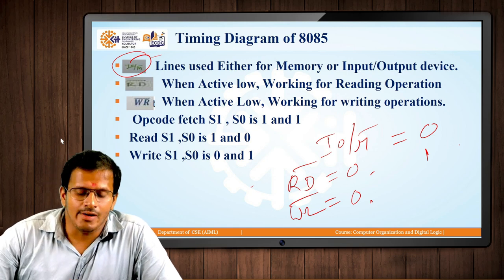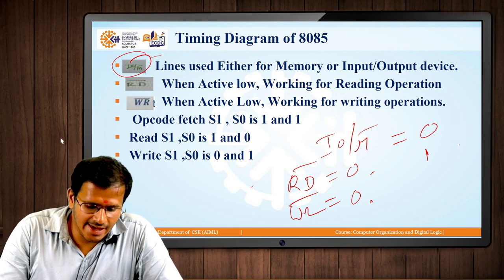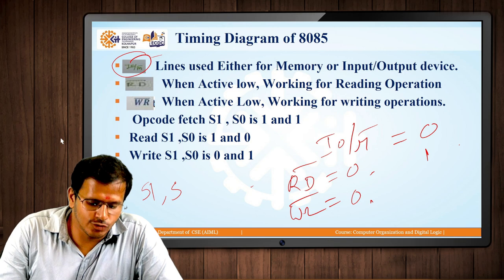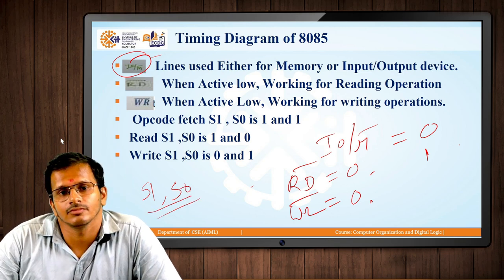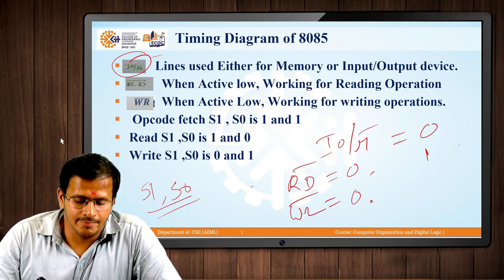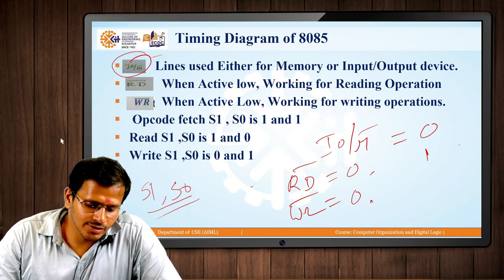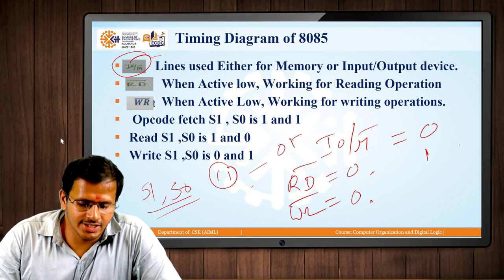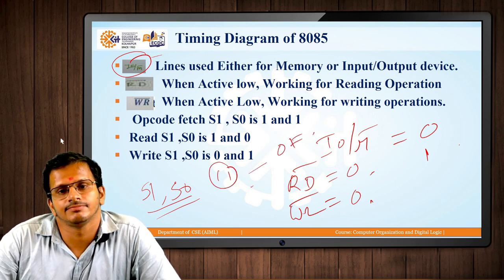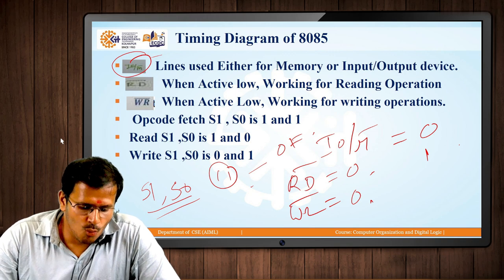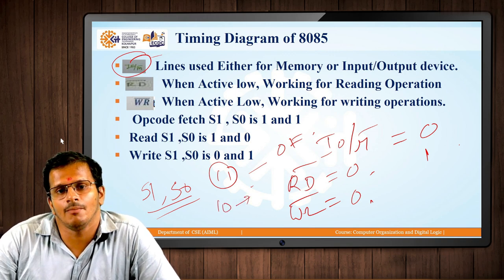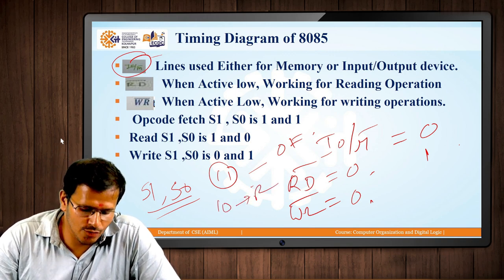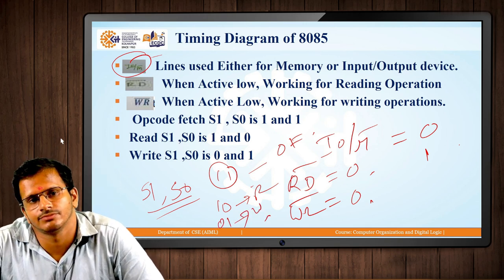We also have two signals S1 and S0. When both values are 1 and 1, opcode fetching is performed. When the value is 1, 0, a read operation is performed. When the value is 0, 1, a write operation is performed.